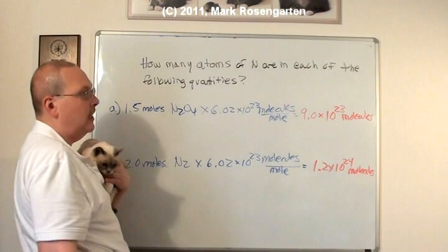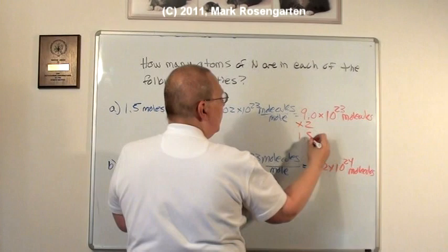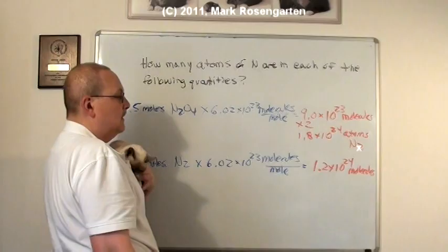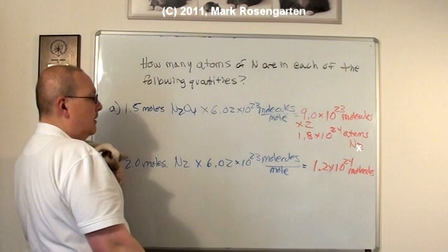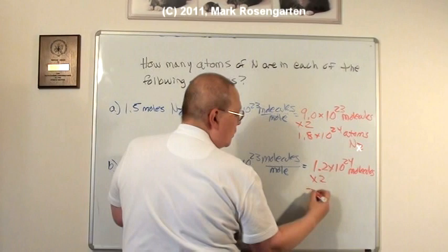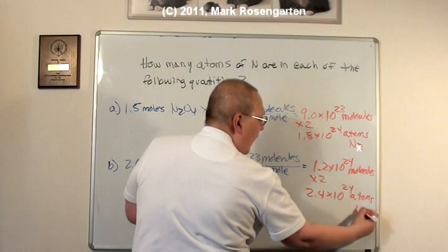Each molecule has 2 atoms of nitrogen in it, so take the number of molecules and multiply it by 2. And this will give you 1.8 times 10 to the 24th atoms of N2 for the first example. And again, there's 2 atoms of nitrogen for every molecule of diatomic oxygen you have. So we double this and that gives us 2.4 times 10 to the 24th atoms of N2.